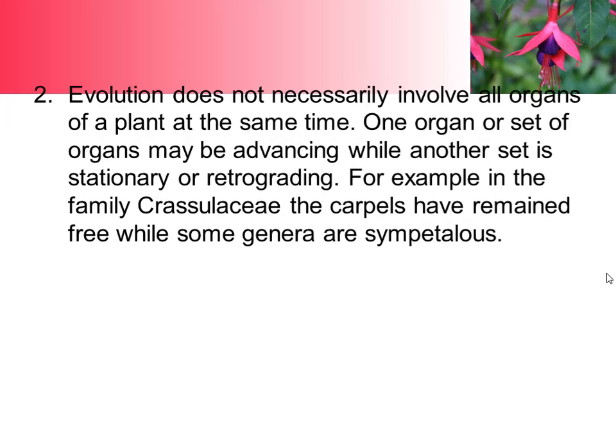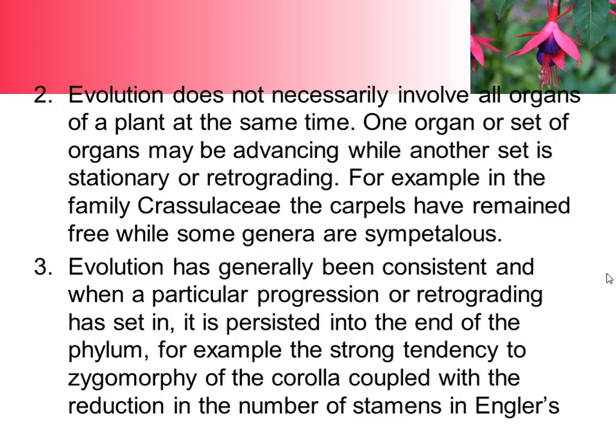Second principle: evolution does not necessarily involve all organs of a plant at the same time. In some plants evolution occurs while in others there is no evolution or reverse evolution occurs. One organ or set of organs may be advancing while another set is stationary or retrograding. For example, in the family Chrysalis, the carpels have remained free while some genera are sympetalous.